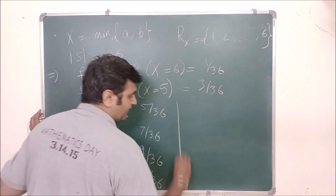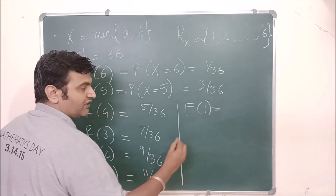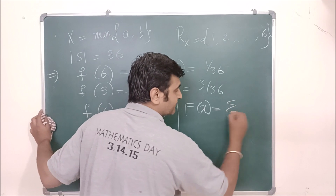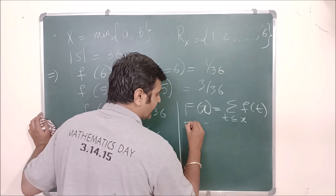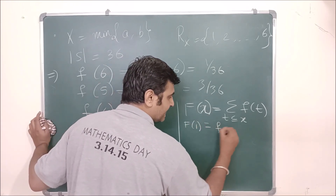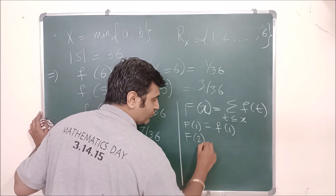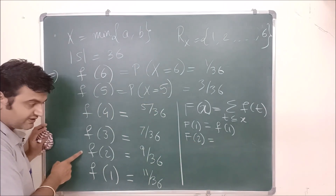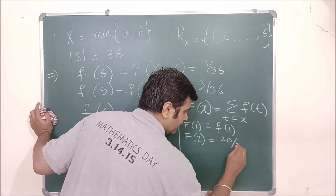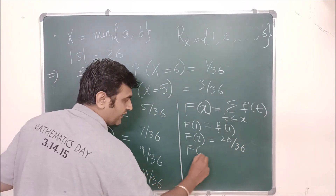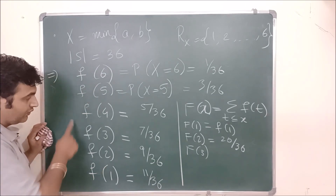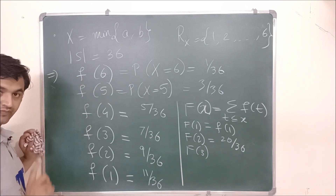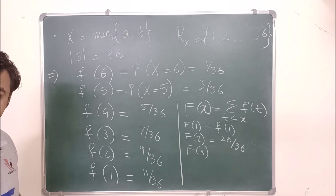Now let's find the CDF. The CDF F(x) = Σ f(t) for t ≤ x. So F(1) = f(1) = 11/36. F(2) = f(1) + f(2) = 20/36. F(3) = f(1) + f(2) + f(3) = 27/36. F(4) = 32/36, F(5) = 35/36, and F(6) = 36/36. So that gives us both the PMF and CDF.